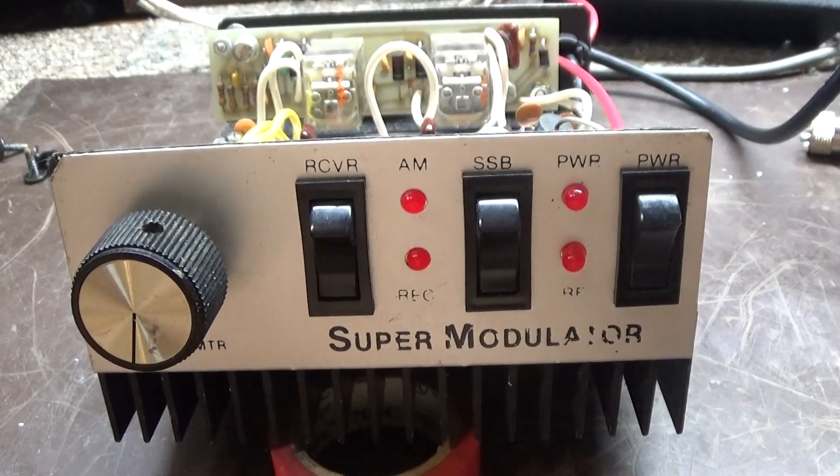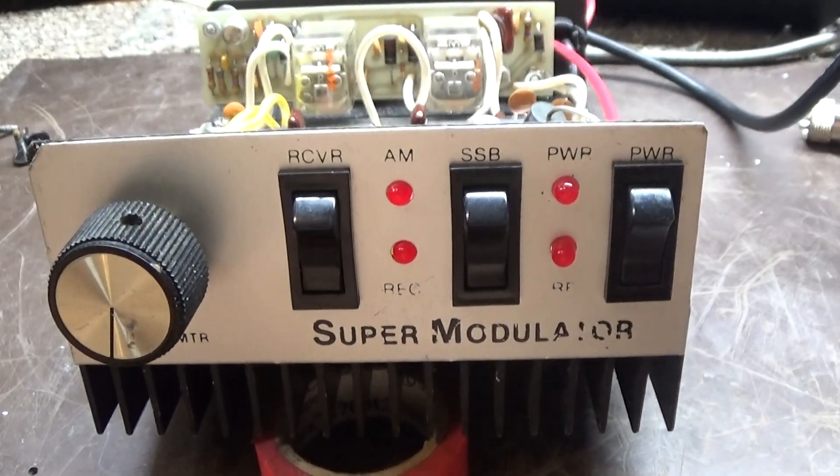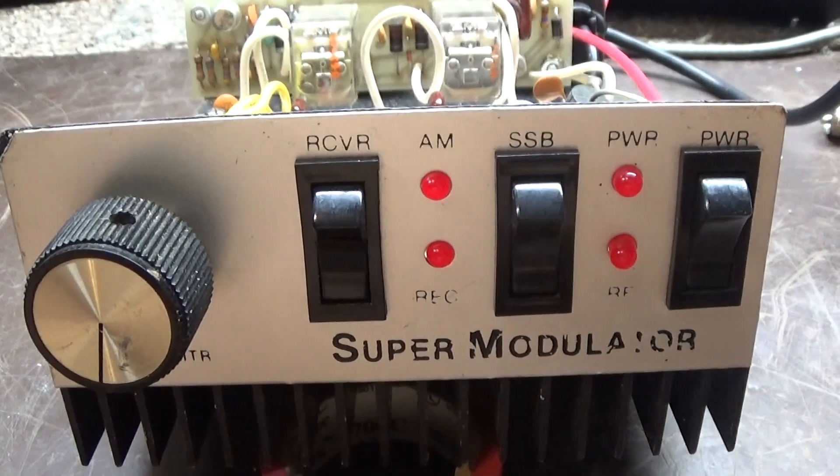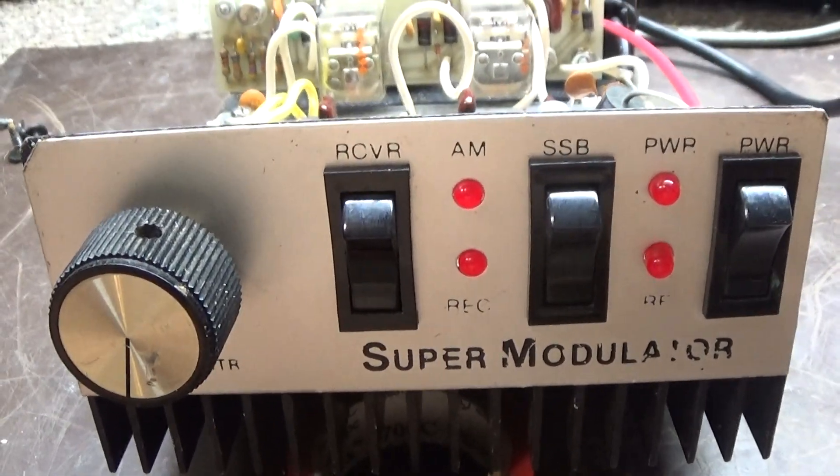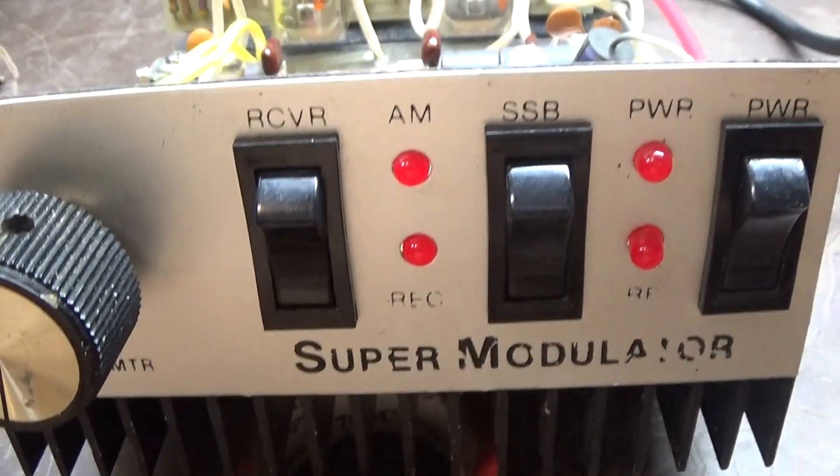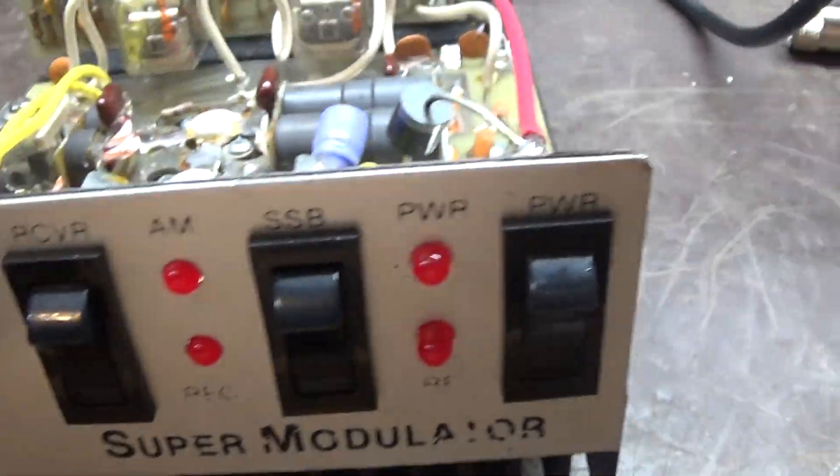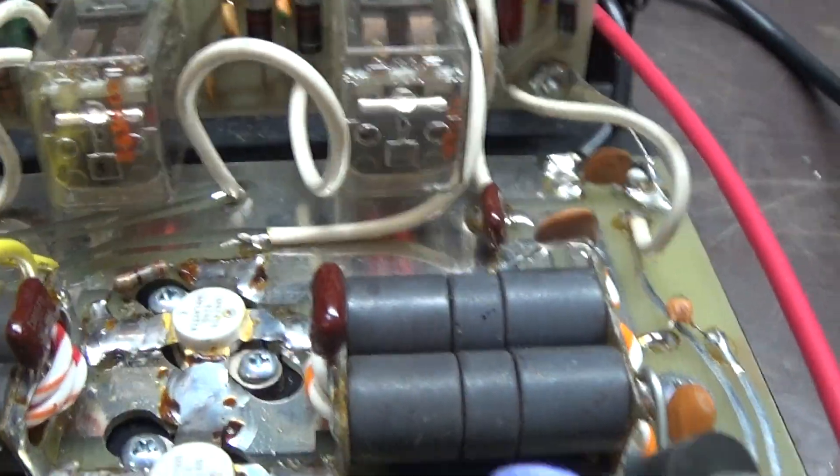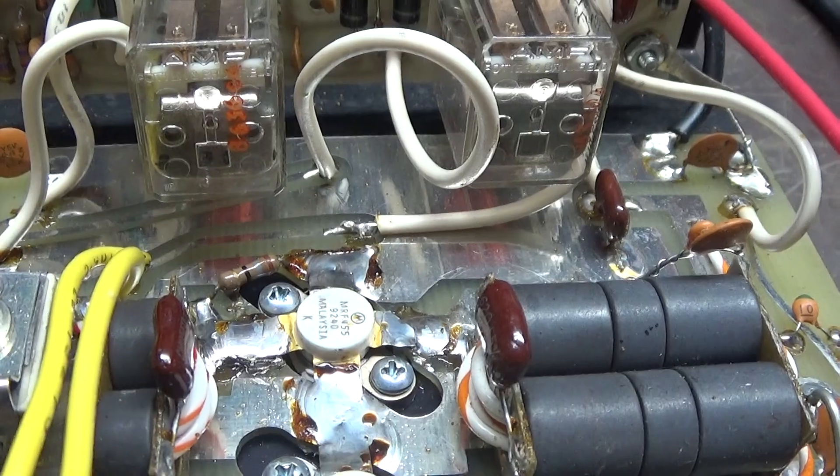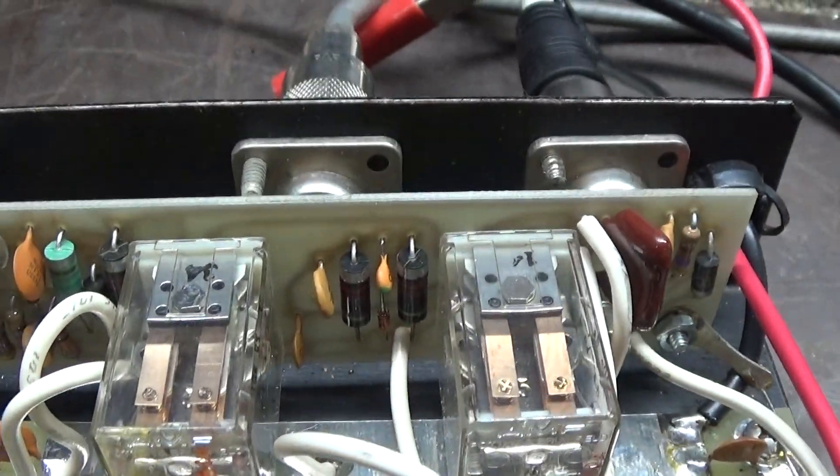Alright, today we're going to do a quick video on a piece I picked up, a super modulator. I don't even know who makes this, but it's a little 2-pill DC mobile modulator with two MRF 455s in there. Looks pretty well built to me, has a nice little preamp that works, power switch, AM, SSB receive preamp.